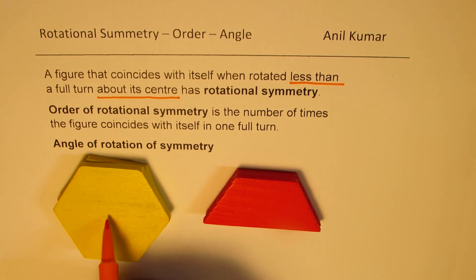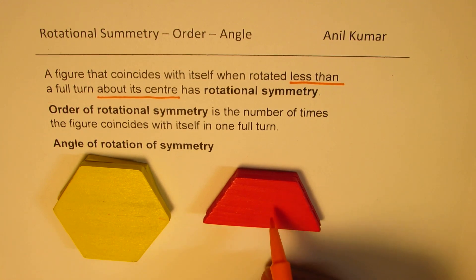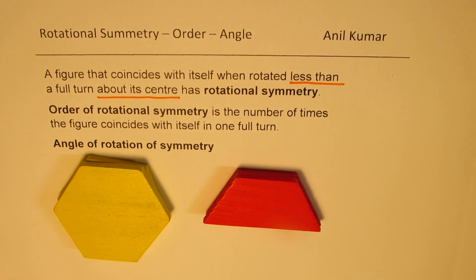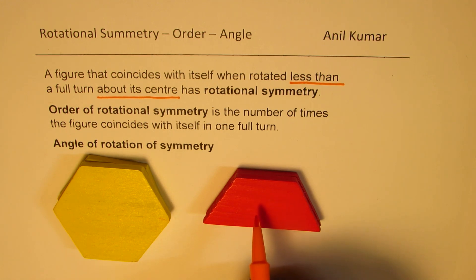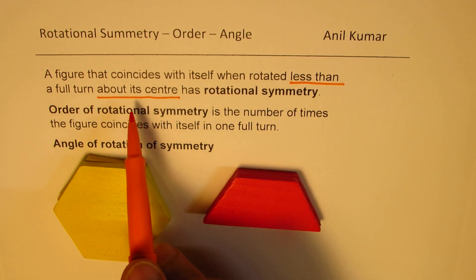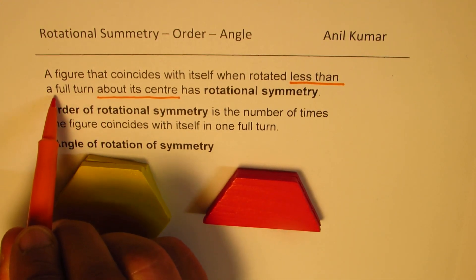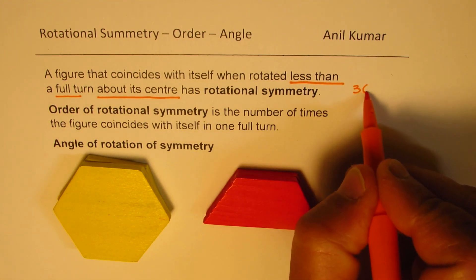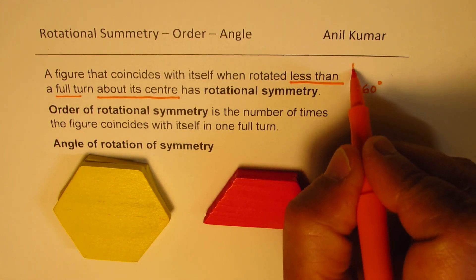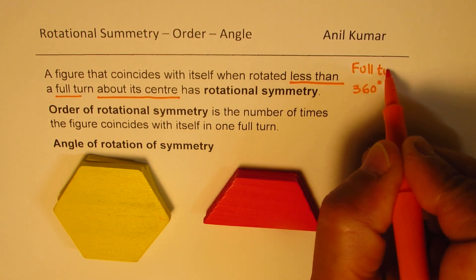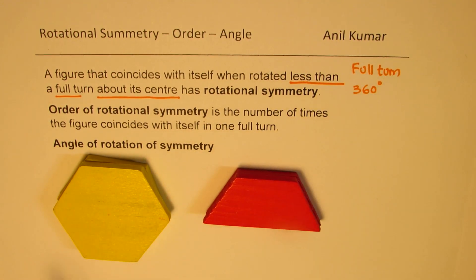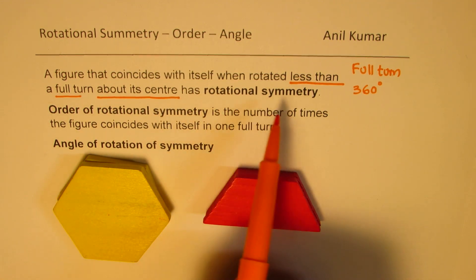When you rotate, it is about its center. The center for the hexagon is right there, so when you rotate, you rotate about its center. Same for the isosceles trapezoid — we were rotating it about its center and it never matched itself when rotated less than a full turn, meaning less than 360 degrees.